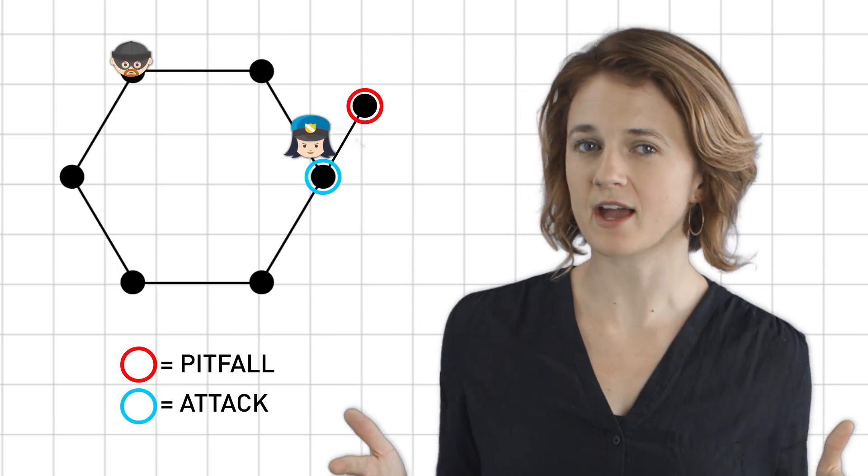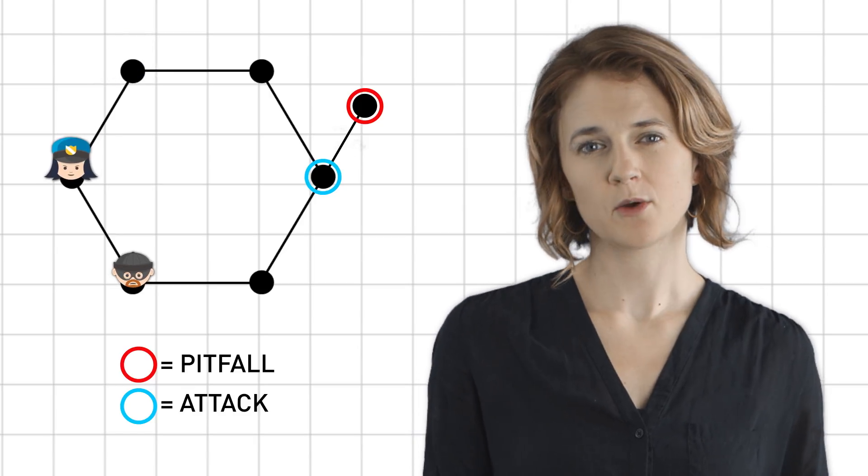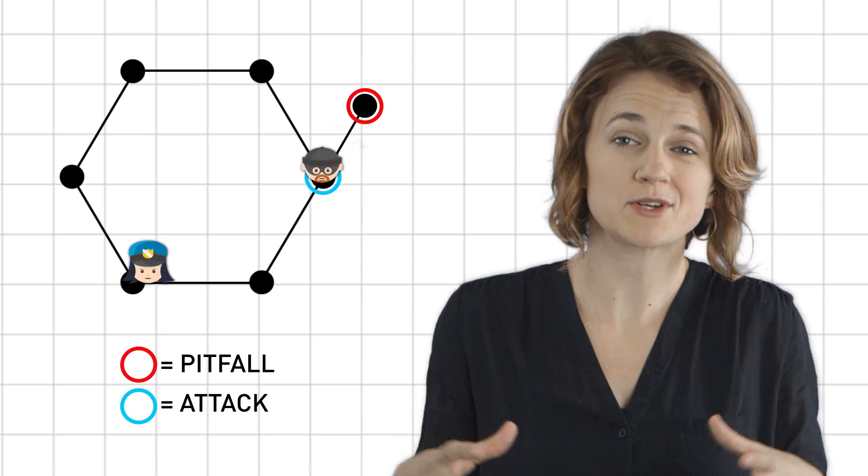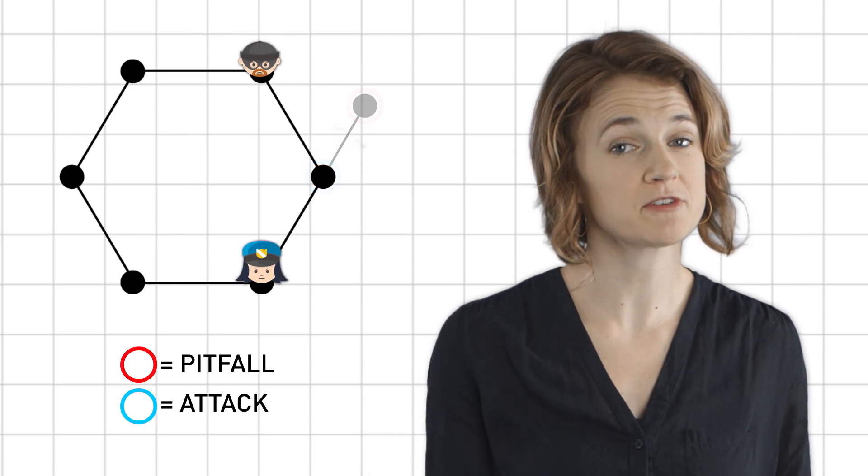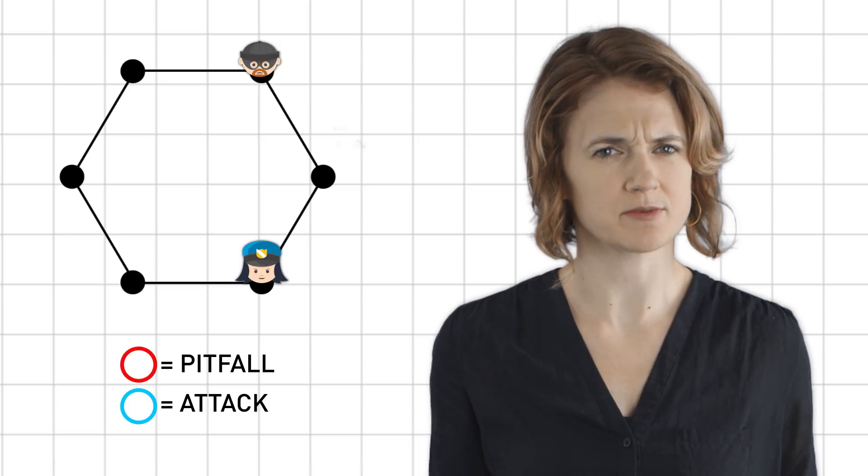Intuitively, that's the big idea. Since the robber is acting strategically, he will avoid entering a pitfall, which means we can ignore them entirely. Effectively, the game will play out on a smaller graph, one where we've removed the pitfall and all the adjacent edges. We can just analyze this new, simpler graph.